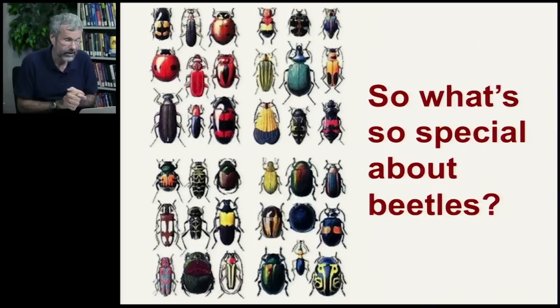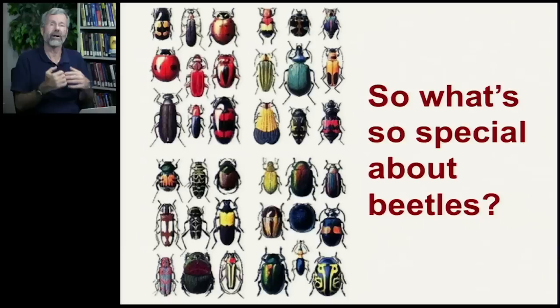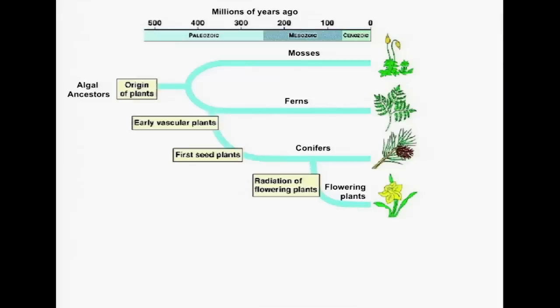This brings us back to the original question: one third of all animal species are beetles. What's so special about beetles? To understand the proliferation of beetles, we need to be aware of the complexity of the broader environment in which they live — typically one beetle species associated with each plant species. Going back hundreds of millions of years, the first plants on land were mosses, then ferns, then vascular plants with stalks and stems, then conifers, and then about 130 million years ago came the origins of the flowering plants.